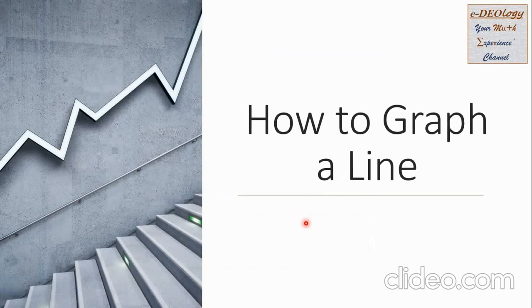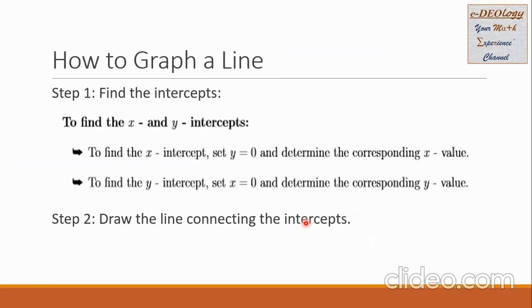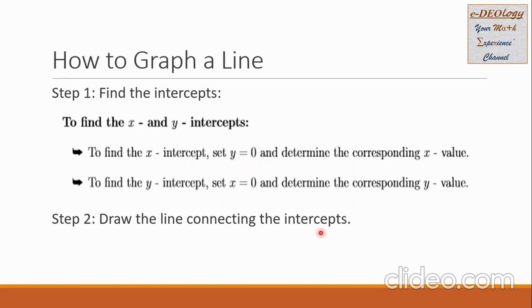Let us learn now how to graph a line. We are going to have two steps. Step one is to find the intercepts. To find the x-intercept, set y equal to 0 and determine the corresponding x value. To find the y-intercept, set x equal to 0 and determine the corresponding y value. And step two, draw the line connecting the intercepts.